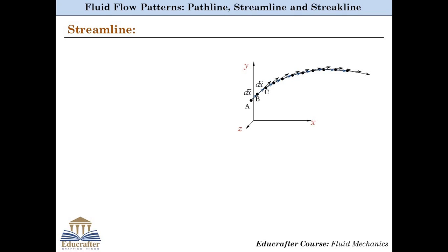Now, connect all these domain points by a continuous line which is tangential to all these velocity vectors. This continuous line is known as a Streamline at that particular instant of time t passing through point A of the domain. For steady fluid flow, Streamline patterns do not change with respect to time, whereas for unsteady flow, the Streamline pattern changes continuously with time.